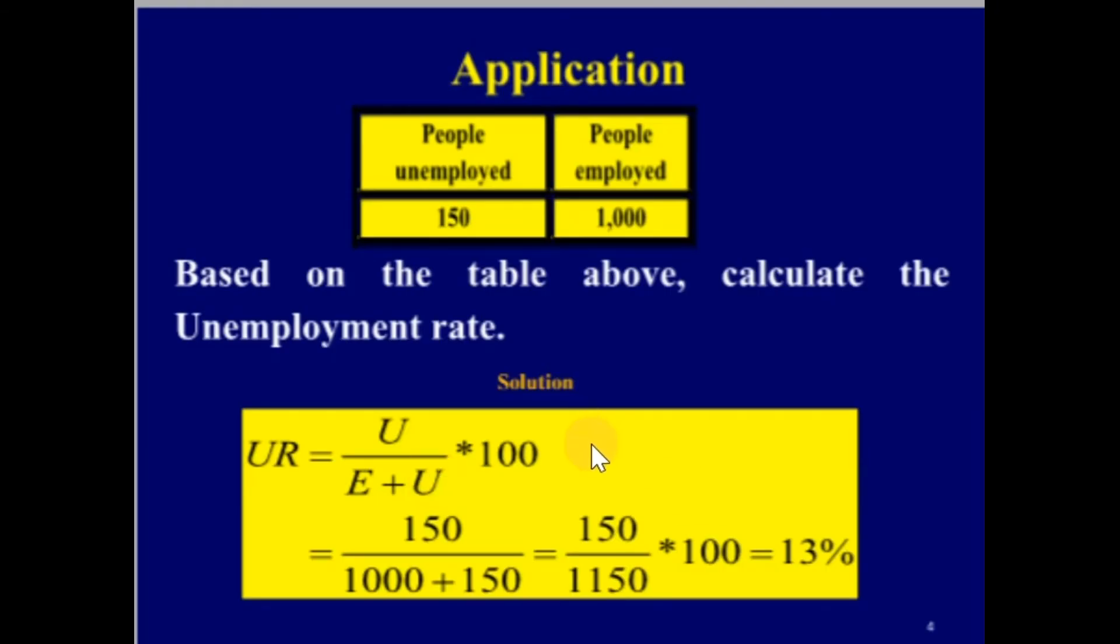Use the information included in this table to compute the unemployment rate. People unemployed are 150, people employed are 1,000. What is the rate of unemployment? UR equals U divided by E plus U.